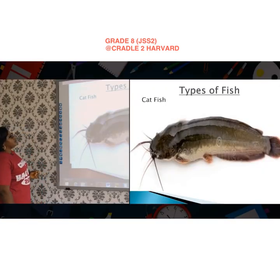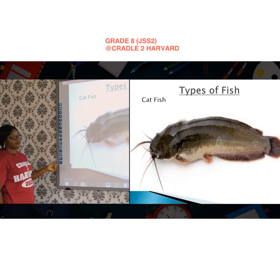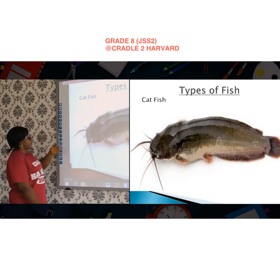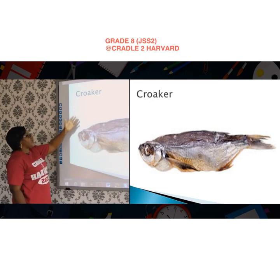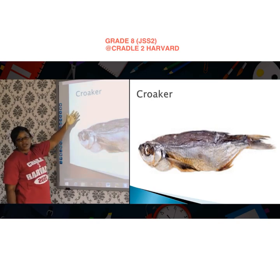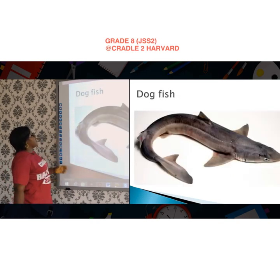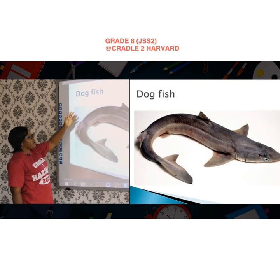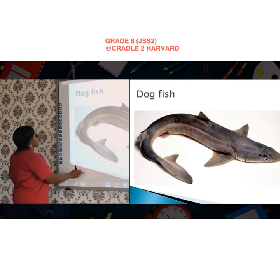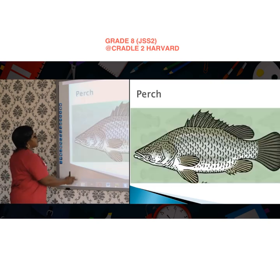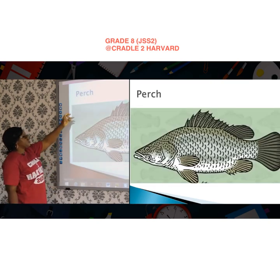Now we have types of fish. We have the catfish, then we have the croaker, then we have the dogfish, then we have the tilapia, and we have the perch.